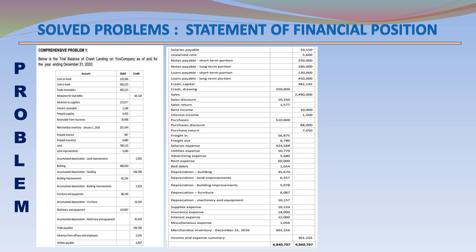Depreciation Furniture 6,087 (Debit); Depreciation Machinery and Equipment 10,157 (Debit); Supplies Expense 10,124 (Debit); Insurance Expense 18,000 (Debit); Interest Expense 12,000 (Debit); Miscellaneous Expense 10,56 (Debit); Merchandise Inventory December 31, 2016 — 301,256; Income and Expense Summary. Total Debits: 4,840,707; Total Credits: 4,840,707.